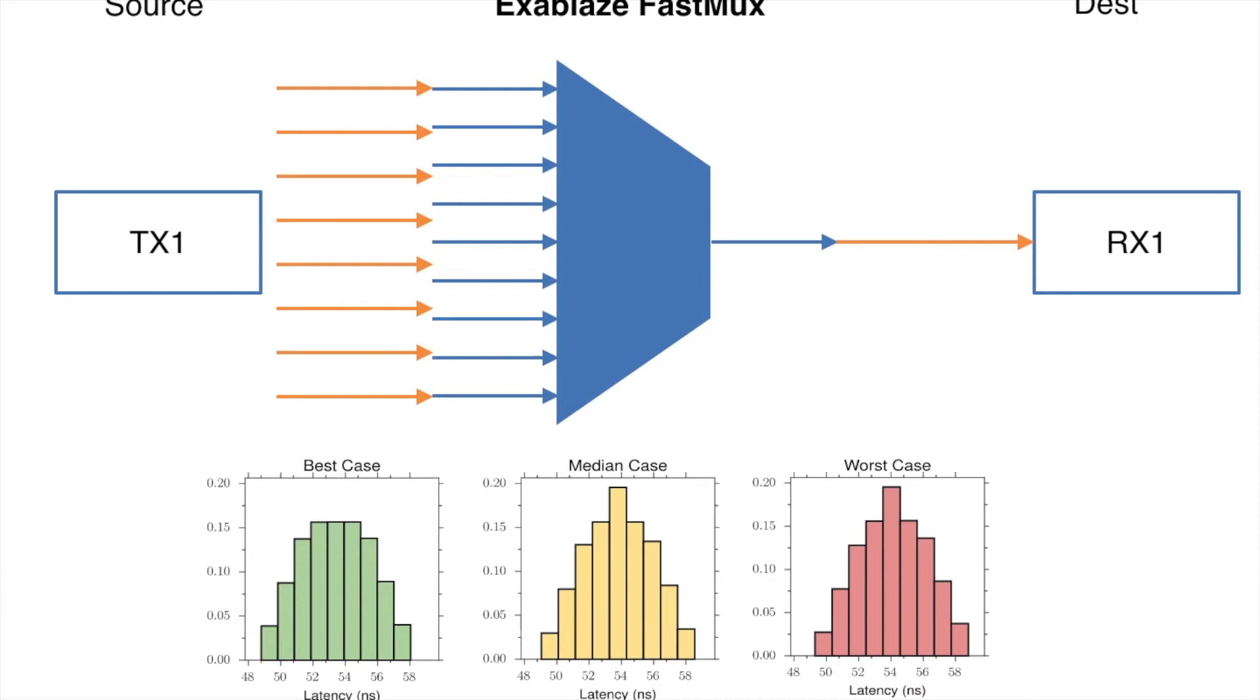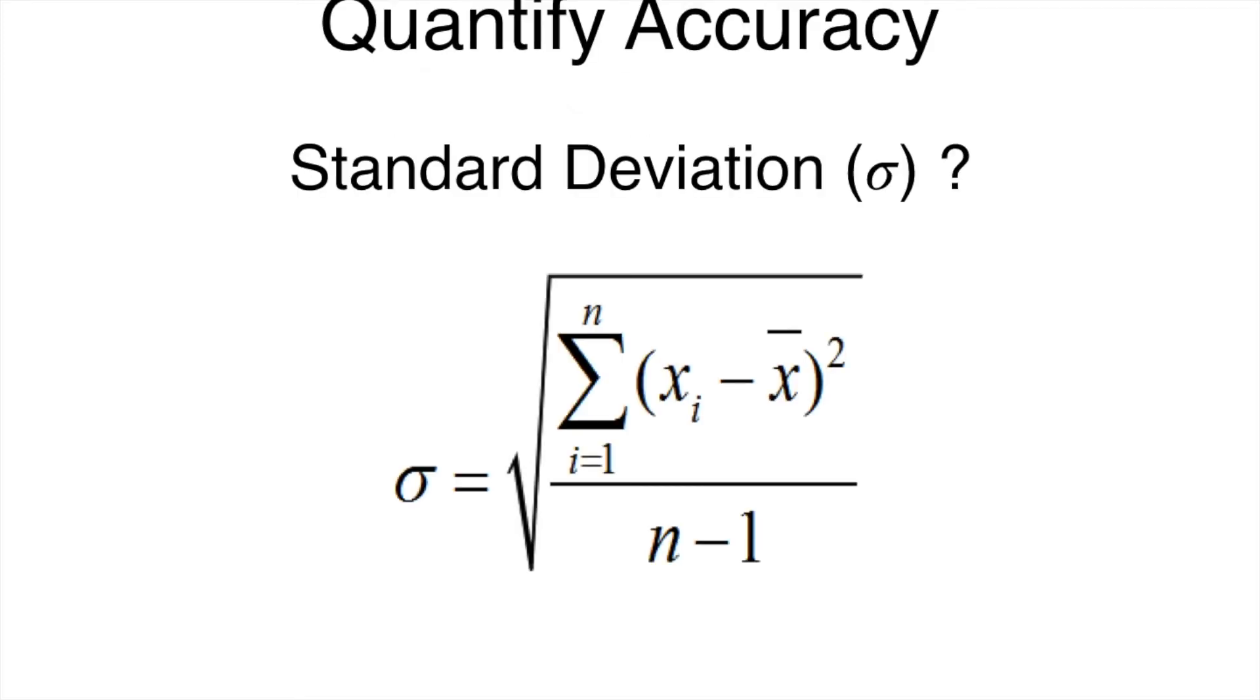I won't go into any further details here. The full characterization report is available from the Exablaze website under the Exalink FastMux tab. Bringing now together all of the work that we've done over the last few parts, we were looking at quantifying the accuracy using standard deviations, and we've worked on producing a measurement methodology that can do very high-accuracy measurement. So when we measure the Exablaze FastMux, what we get is a delay of 48.79 ns through the device.